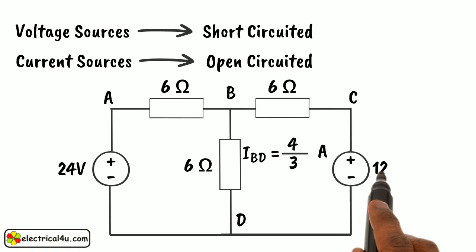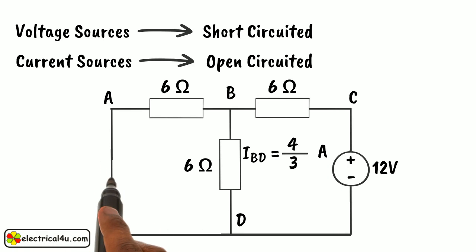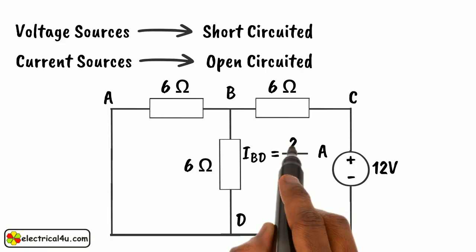Now, consider the 12V source and short-circuit the 24V source as shown. By applying any simple circuit law, we will find that the current through branch BD is 2 by 3 amperes.